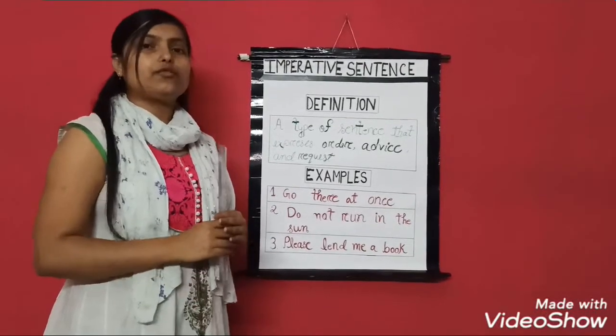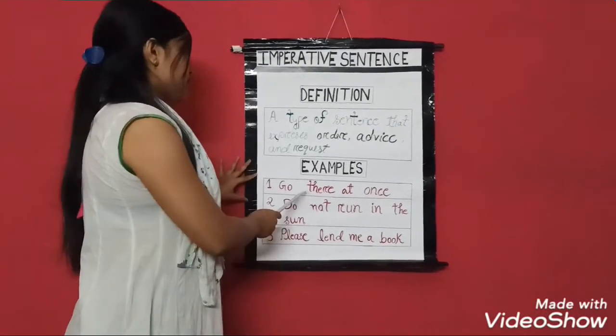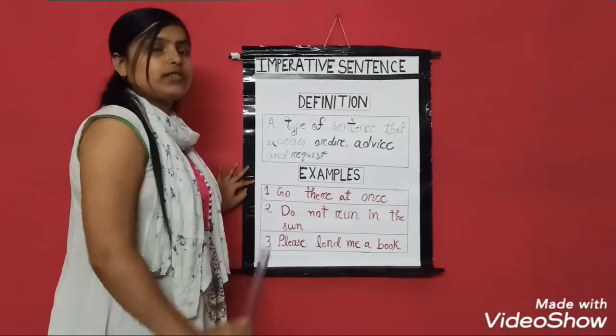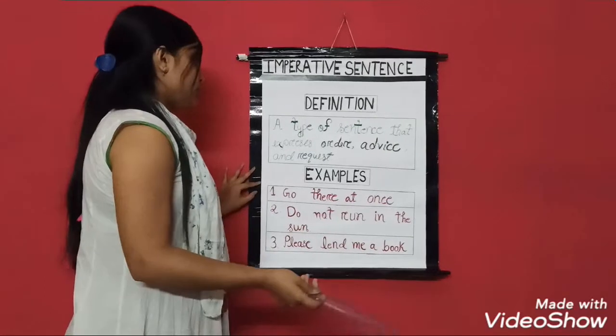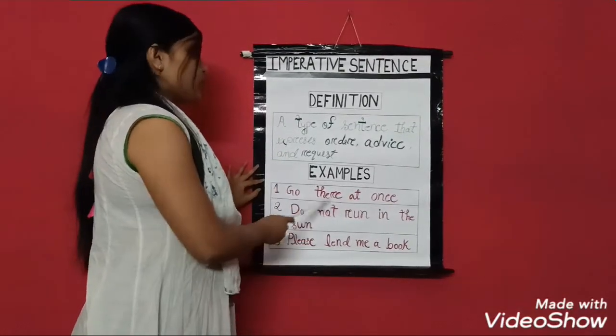If you look at the first instance, 'go there at once,' you will feel that here the speaker is telling someone or ordering someone to go somewhere.